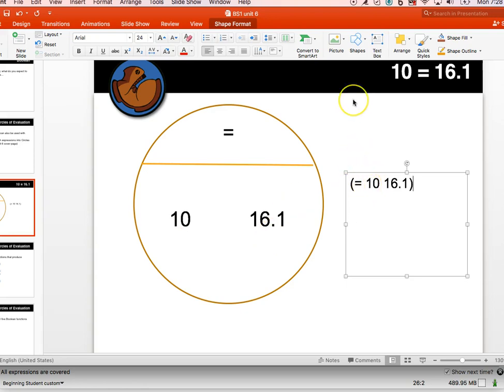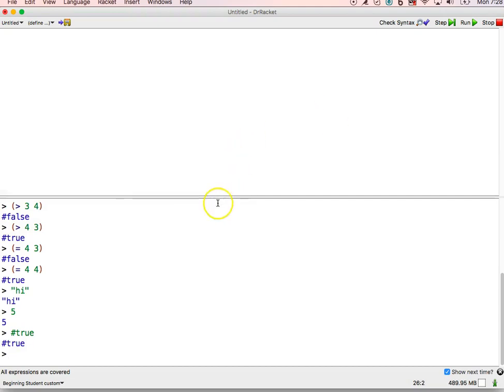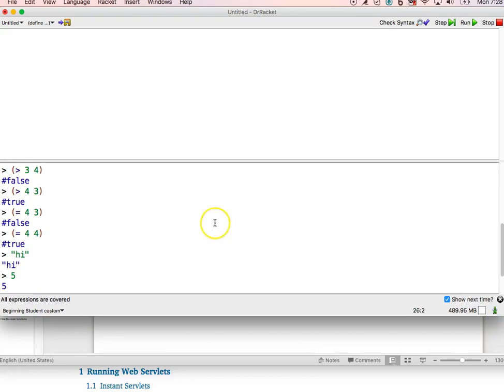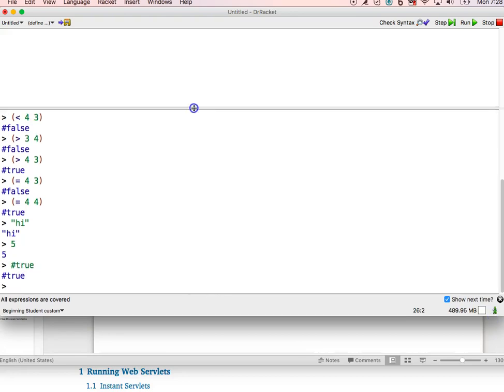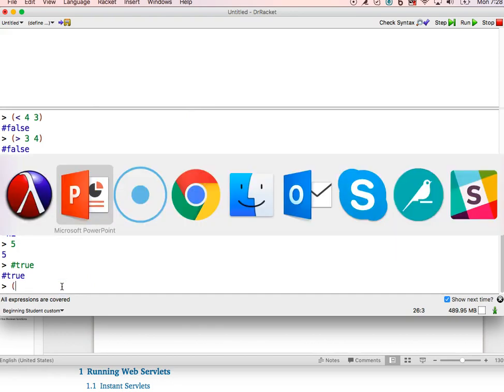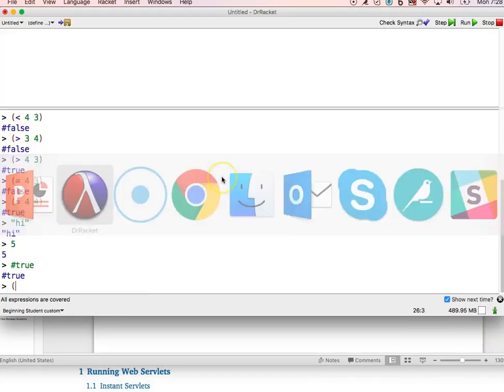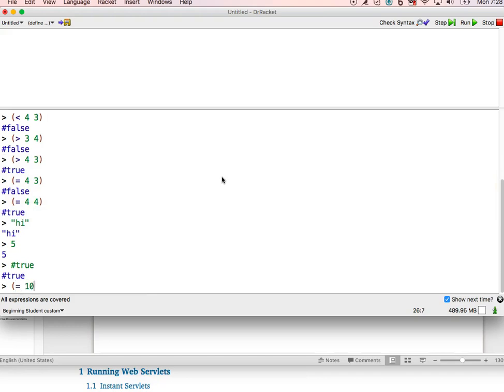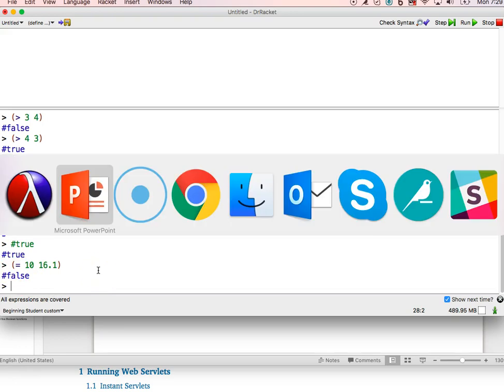Now let's go try that in Dr. Rackett. So you can see that down at the bottom. So let me go back and look. Equal 10, 16.1. And what do I think is going to happen? Well, 10 and 16.1 are not equal. So I think it's going to be Boolean of false. Yes. That's correct. So that's how you do those.